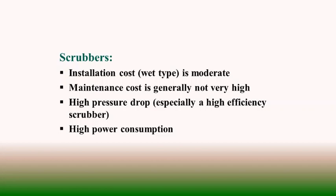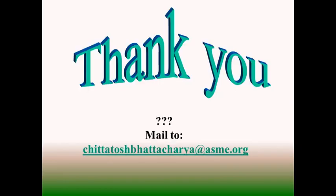Naturally, for boilers, ESPs and mechanical dust collectors are mostly used, and sometimes fabric filters too. Scrubbers are utilized for arresting toxic gases of SOx and NOx. This way, in power stations, we contribute to emission control through these mechanisms. With this we come to the end of the discussion on dust collection and dust separation devices, how they are employed in power stations for the purpose of monitoring and maintaining the emission norms. If you have any questions, please do not hesitate to mail me. Thank you all, all the best.